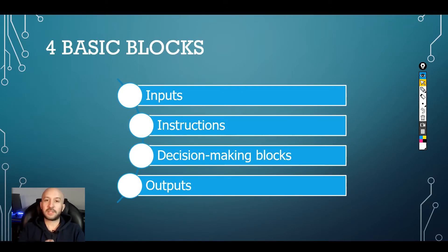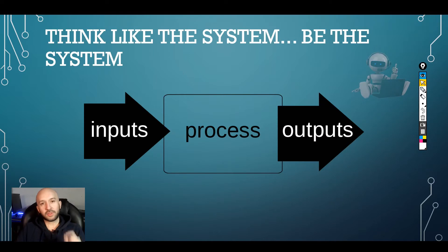Let's go through some basic blocks that an algorithm is composed with. Inputs, instructions, decision-making blocks and outputs. First we will focus on inputs and outputs. You have to think like the system and be the system.